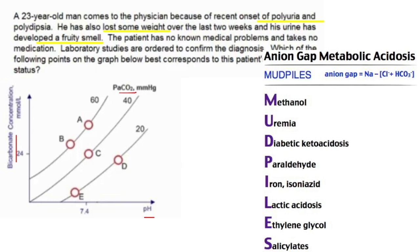Draw a vertical line at pH 7.4. Everything to the left of that line is acidosis, everything to the right is alkalosis. We should be on the acidosis side, so we can already exclude answer choice D. We can also exclude answer choice C because that represents exactly 7.4, which is normal, and this patient is acidotic.